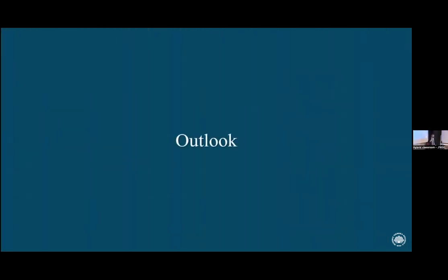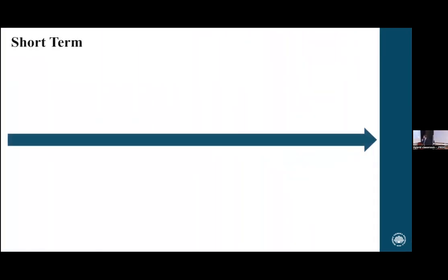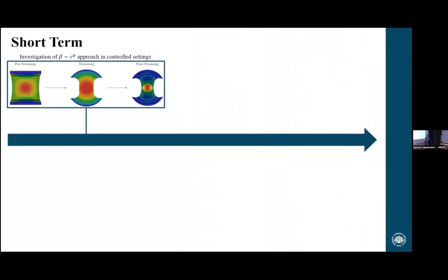As for the future of sheet metal forming and my research in particular, there are short-term and long-term views. Short-term: the first step is to do a proper investigation of the beta–εp approach or transformed space for non-linear strain paths. We may have been too ambitious by trying it on an industrial component from day one, so let's bring it back into a controlled experimental setting to see what we can learn there.